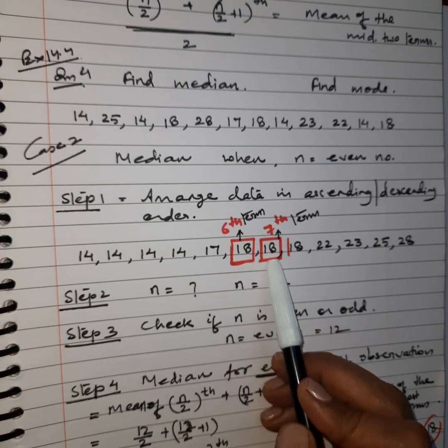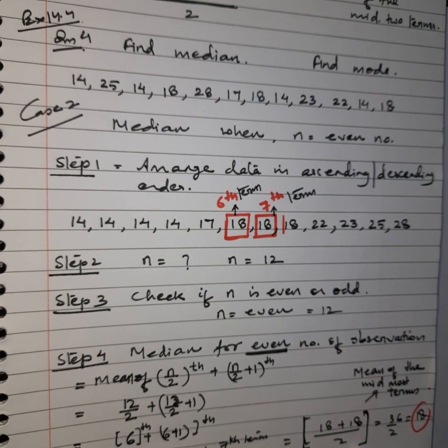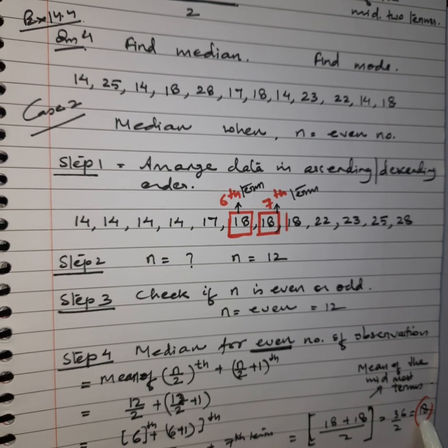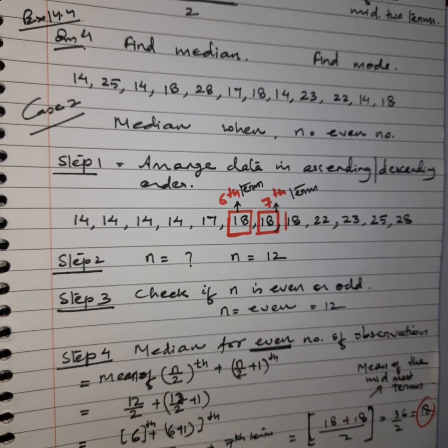Now 6th term is 18. 7th is 18. So 18 plus 18 divided by 2 gives you the mean value and this becomes the median of this data. Thank you so much.